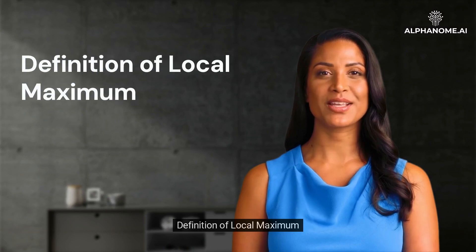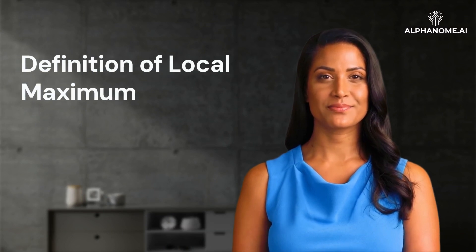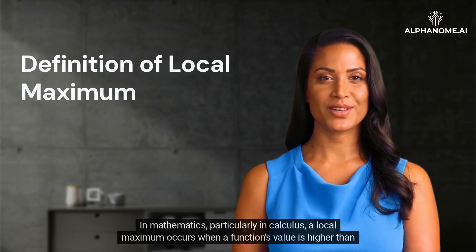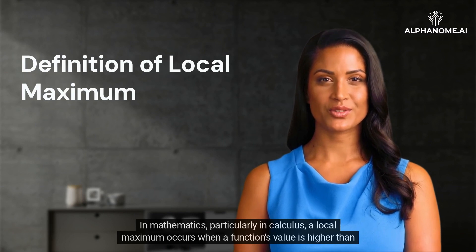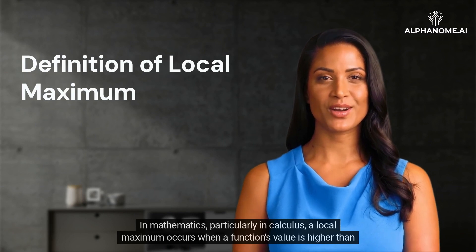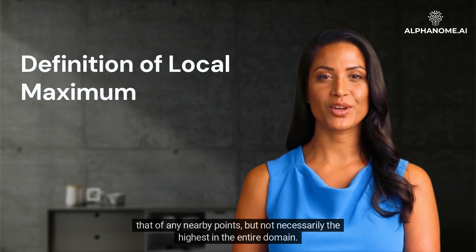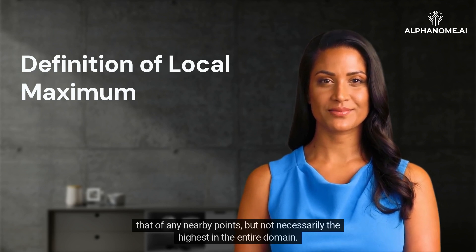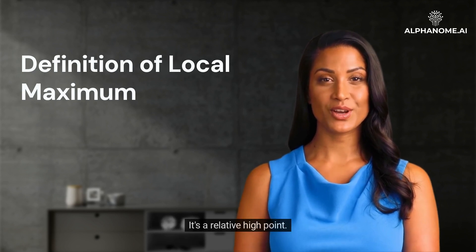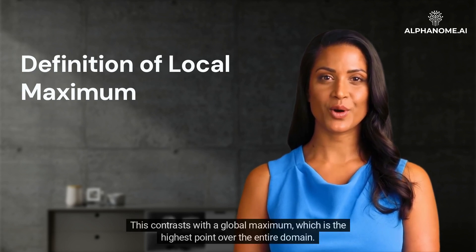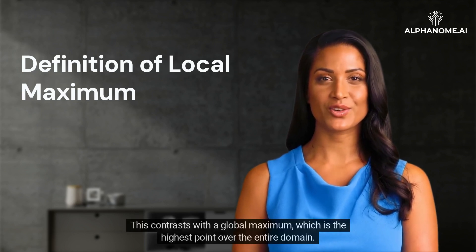In mathematics, particularly in calculus, a local maximum occurs when a function's value is higher than that of any nearby points, but not necessarily the highest in the entire domain — it's a relative high point. This contrasts with a global maximum, which is the highest point over the entire domain.